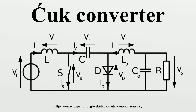The two inductors L1 and L2 are used to convert respectively the input voltage source and the output voltage source into current sources. At a short time scale, an inductor can be considered as a current source as it maintains a constant current. This conversion is necessary because if the capacitor were connected directly to the voltage source, the current would be limited only by the parasitic resistance, resulting in high energy loss.